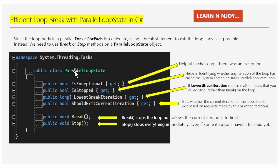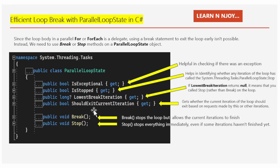If you see this code snippet, it has four properties: IsExceptional, IsStopped, LowestBreakIteration, and ShouldExitCurrentIteration. The methods are BreakMethod and StopMethod. Let's review them one by one.